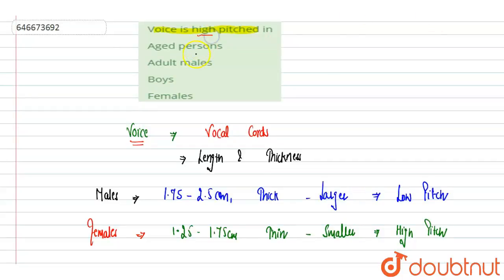Aged person - in aged person this is incorrect, their pitch is quite low. Adult males - adult males, their pitch is low because they are having the thick and larger vocal cord. Boys - boys also, we can say that until puberty they are having comparatively less.